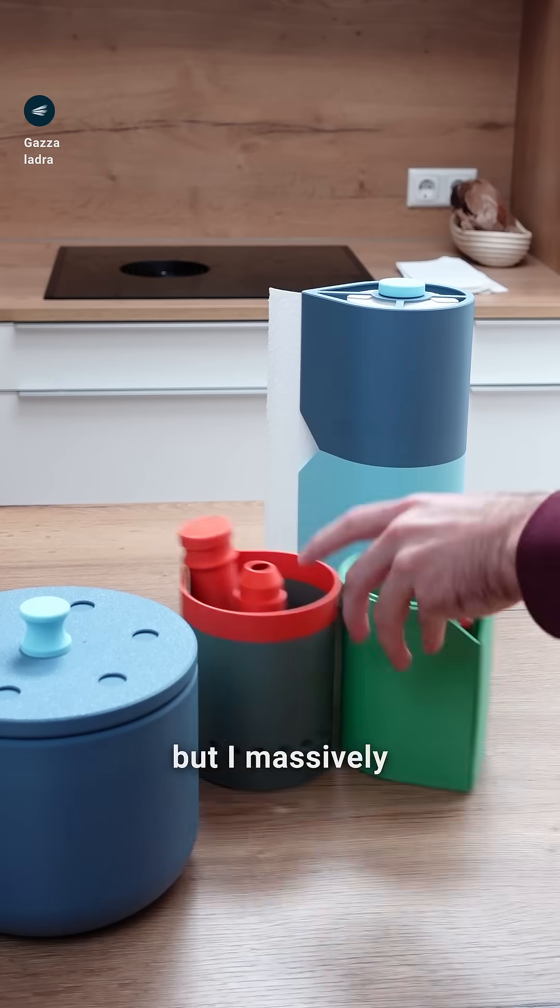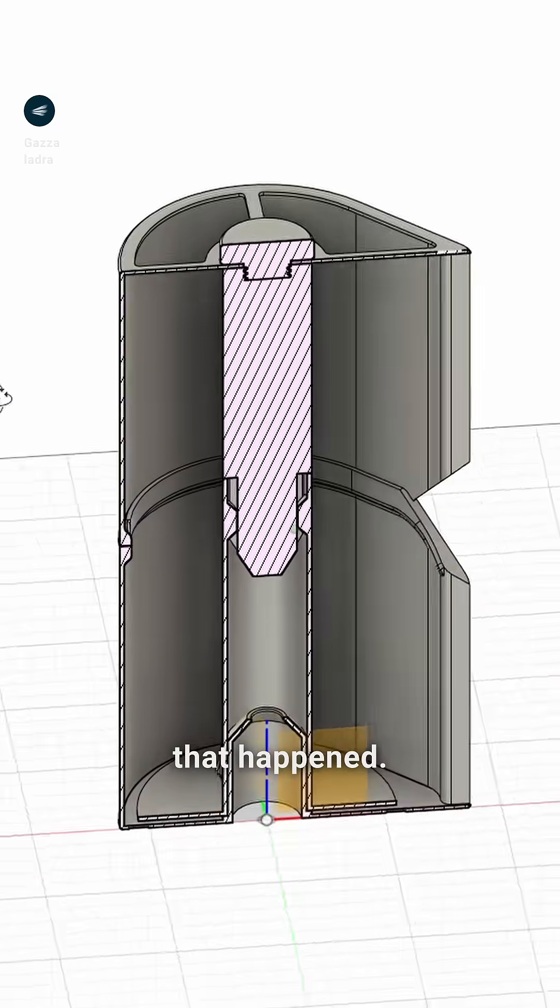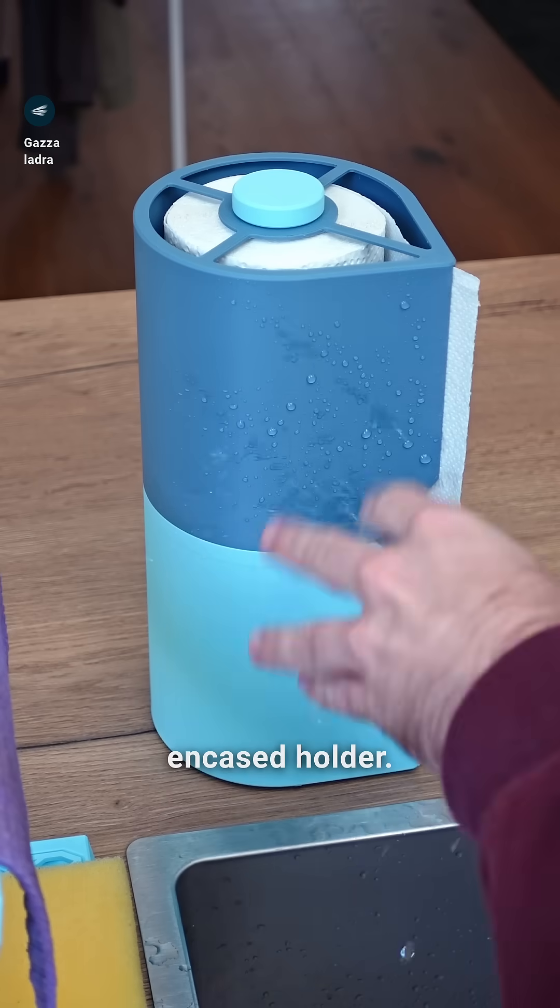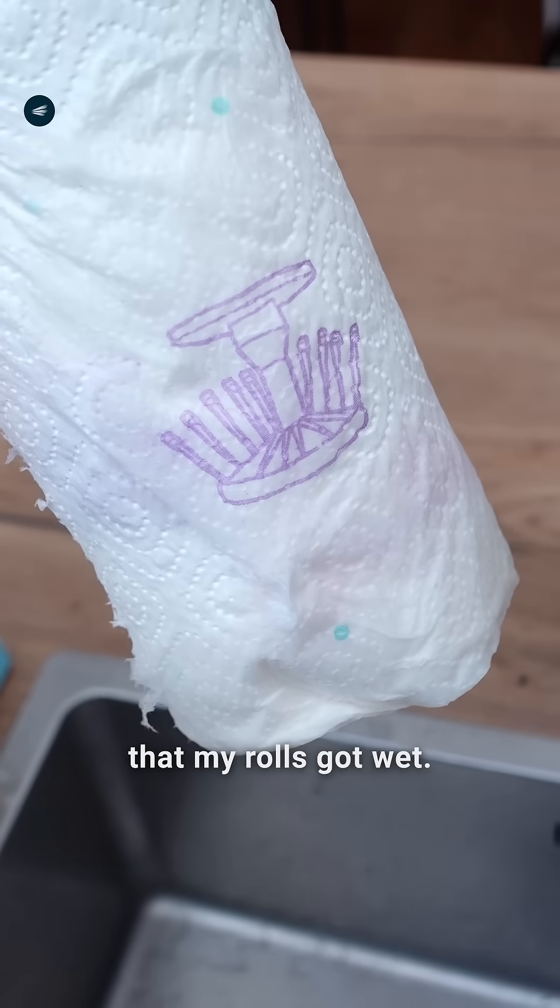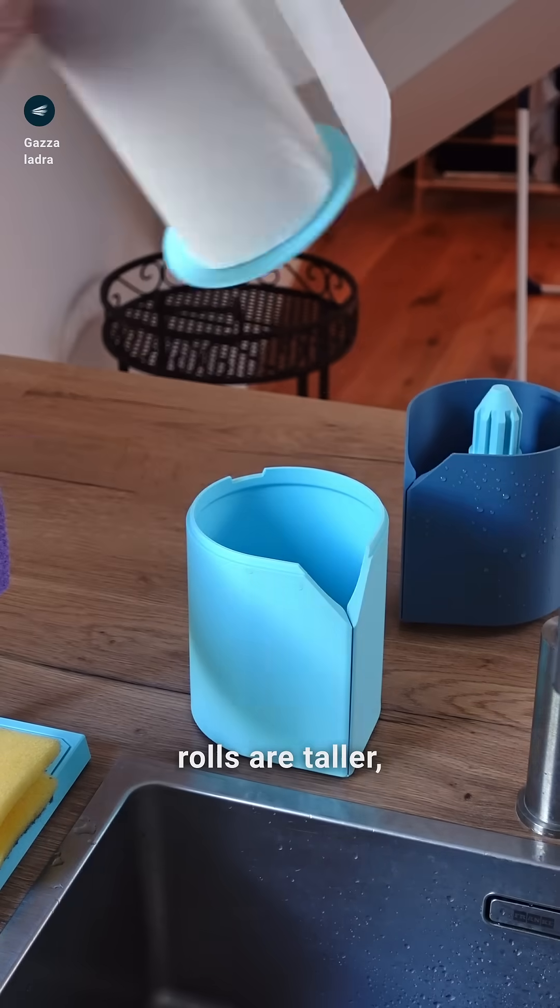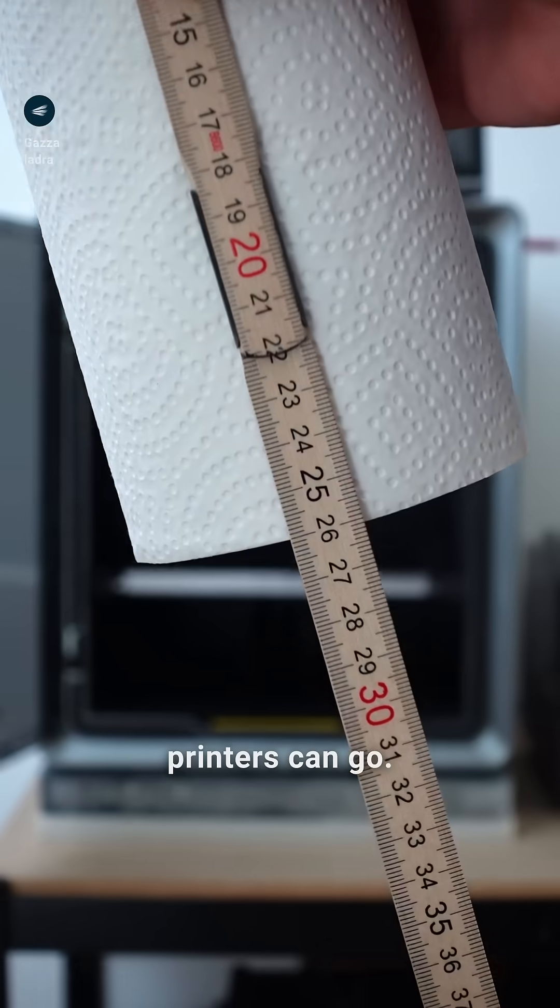It is just a kitchen towel dispenser, but I massively over-engineered it, and here's how that happened. I wanted to design a fully encased holder because I did not like that my rolls got wet. I had to split the design in the center, since these rolls are taller than most 3D printers can go.